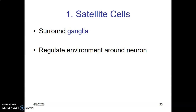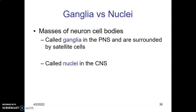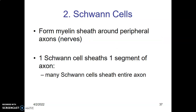Satellite cells are support cells of the peripheral nervous system found within ganglia like the dorsal root ganglion. The difference between ganglia and nuclei: a collection of neuronal cell bodies in the peripheral nervous system is called a ganglion, and these are surrounded by satellite cells. A collection of neuronal cell bodies in the central nervous system — the brain and spinal cord — forms what we call nuclei.